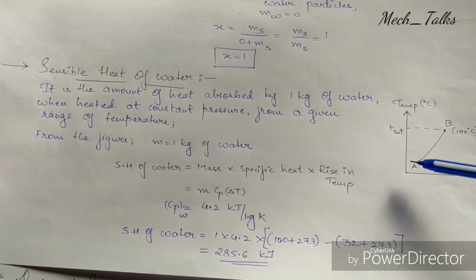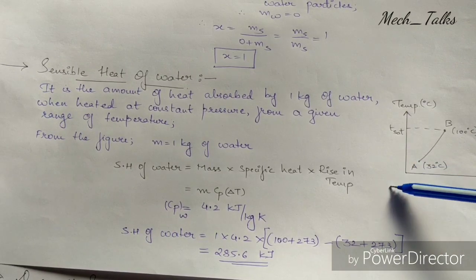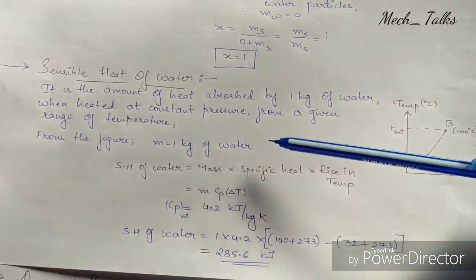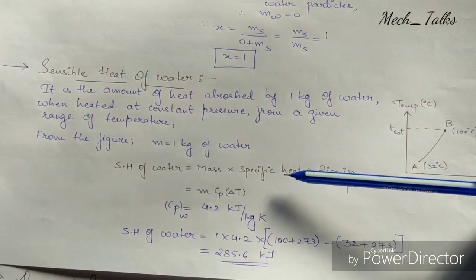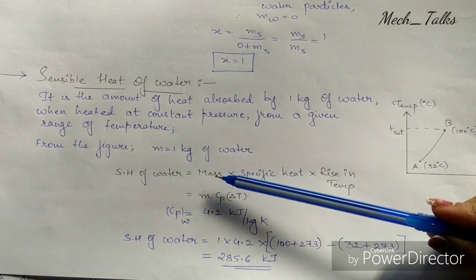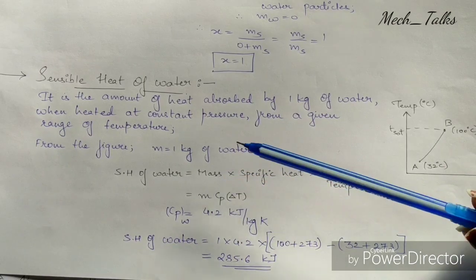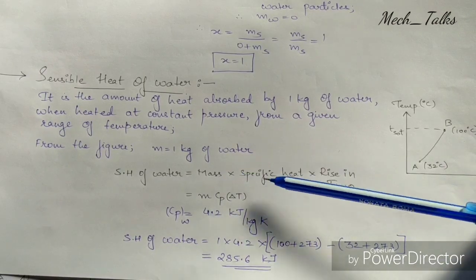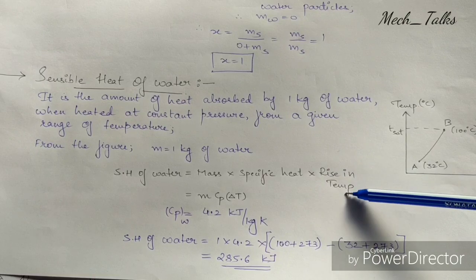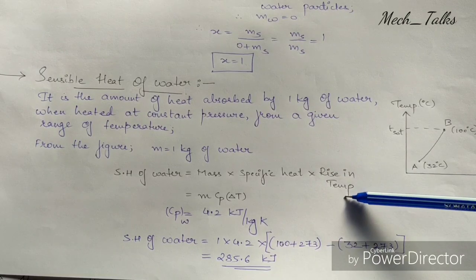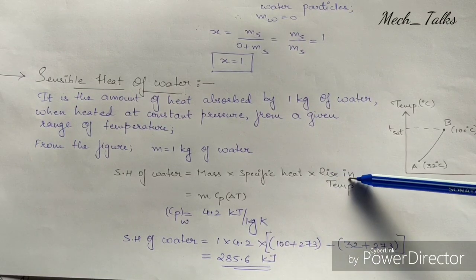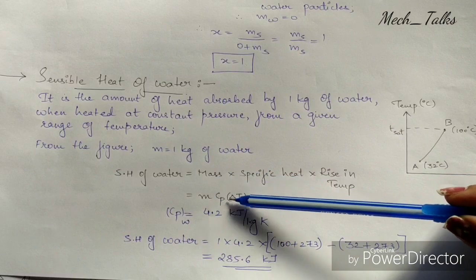To find the sensible heat for one kilogram of water, sensible heat equals mass times specific heat times rise in temperature, that is Q = m × cp × ΔT.